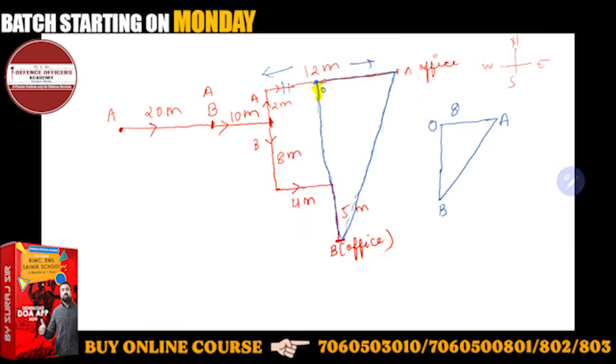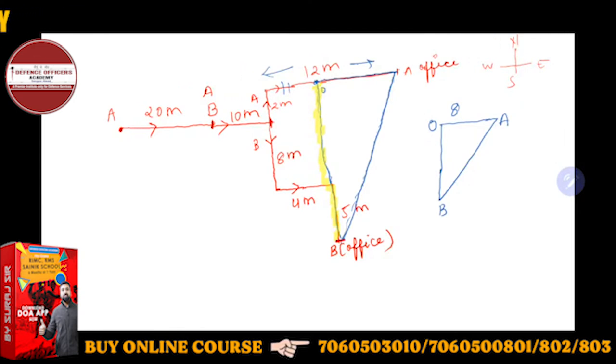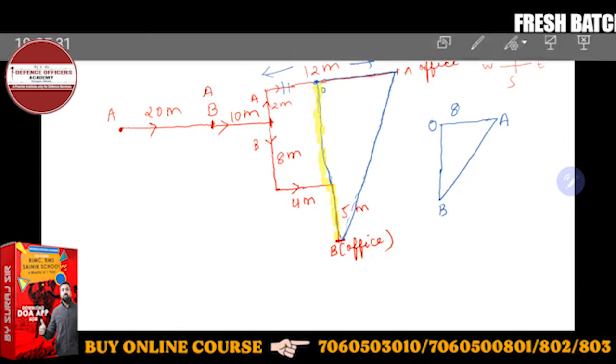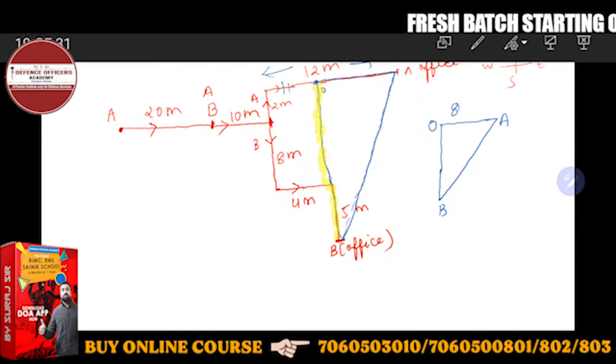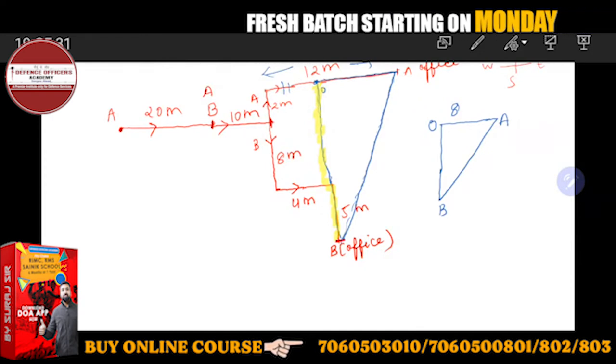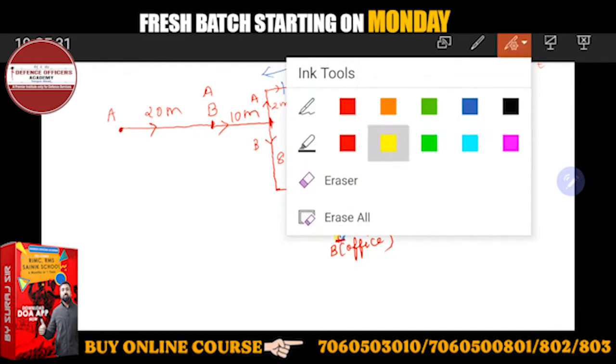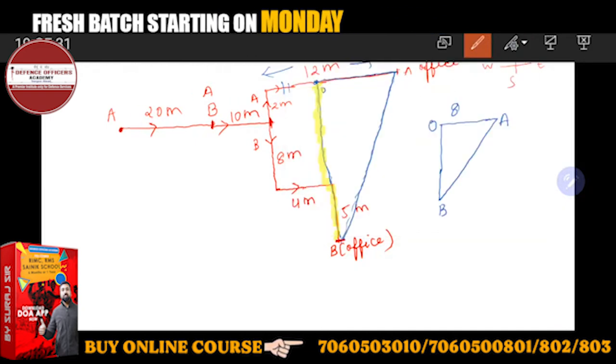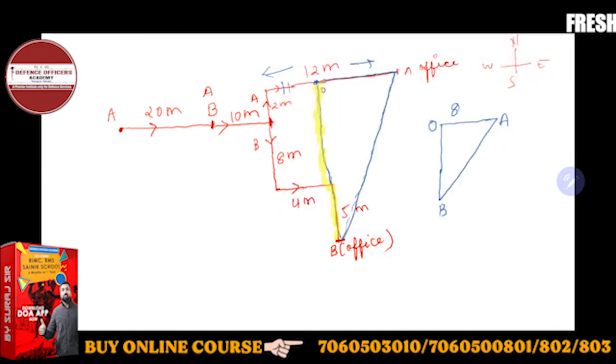In that way, OB is going to be this. I will highlight this from yellow. This is OB. And how much will it go? What will be the length of OB? If you are all active, please tell me what will be the length of OB? OB is 15.